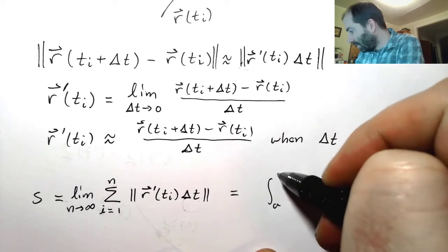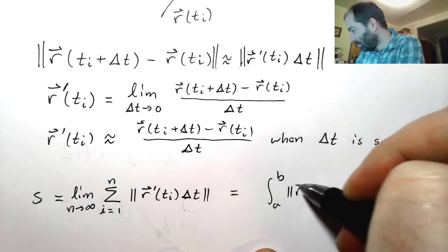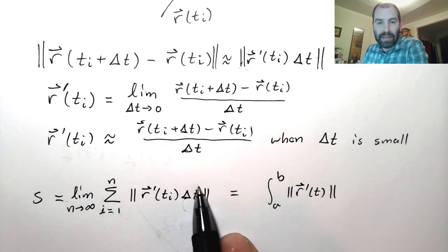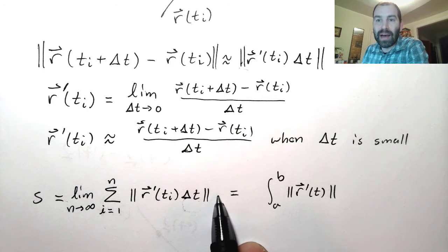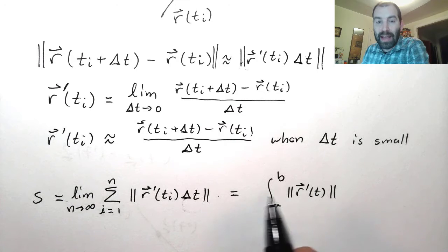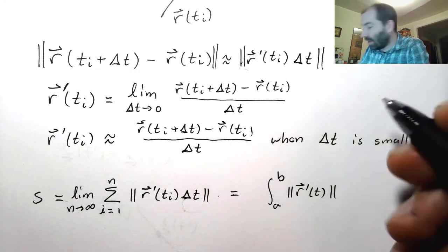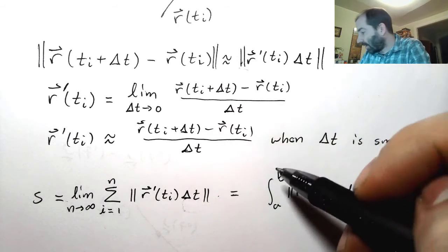So the limit will end up being... What I'm going to do is I'm going to take... This is just a scalar. Delta t is always positive. So I can pull it outside of the magnitude. So I'm going to pull it outside. And in the integral, when we write down the integral, the delta t becomes a dt. And this is our formula for arc length.